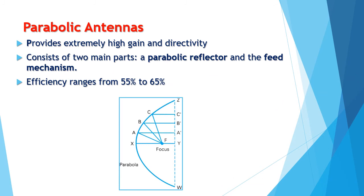For this kind of antenna, the most popular is the parabolic antenna. Parabolic antennas provide extremely high gain and directivity. A parabolic antenna consists of two main parts: first, the parabolic reflector, and second, the feed mechanism. The efficiency of a parabolic antenna ranges from 55% to 65% with uniform illumination. As you can see in the image, the parabola reflects the electromagnetic waves — if transmitting, it sends those reflected waves towards free space.